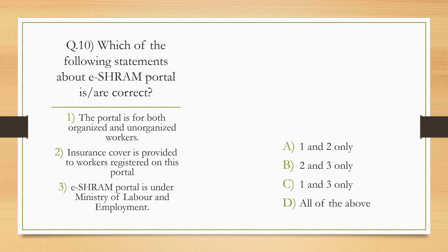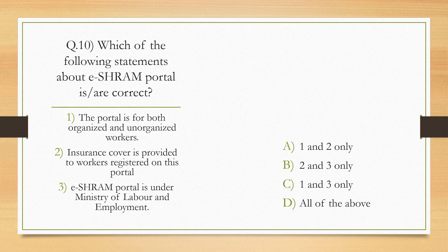Which of the following statements about the e-Shram portal is or are correct? The portal is for both organized and unorganized workers. Insurance cover is provided to workers registered on this portal. The e-Shram portal is under the Ministry of Labor and Employment. Options: 1 and 2 only, 2 and 3 only, 1 and 3 only, all of the above. The correct answer is B — 2 and 3 only, because the portal is only for unorganized workers, not organized workers. If you like this class, please like, subscribe, and share the video.